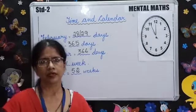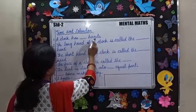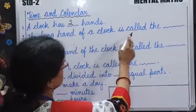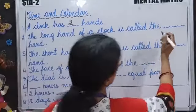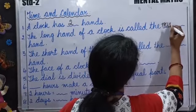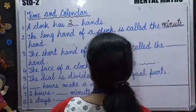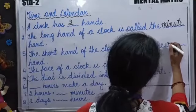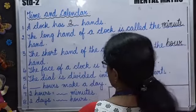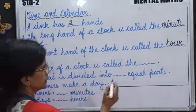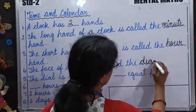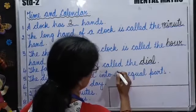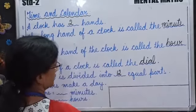Now let's do the questions. A clock has how many hands? Two hands. The long hand of a clock is called the minute hand. The short hand of the clock is called the hour hand. The face of a clock is called the dial. The dial is divided into 12 equal parts.